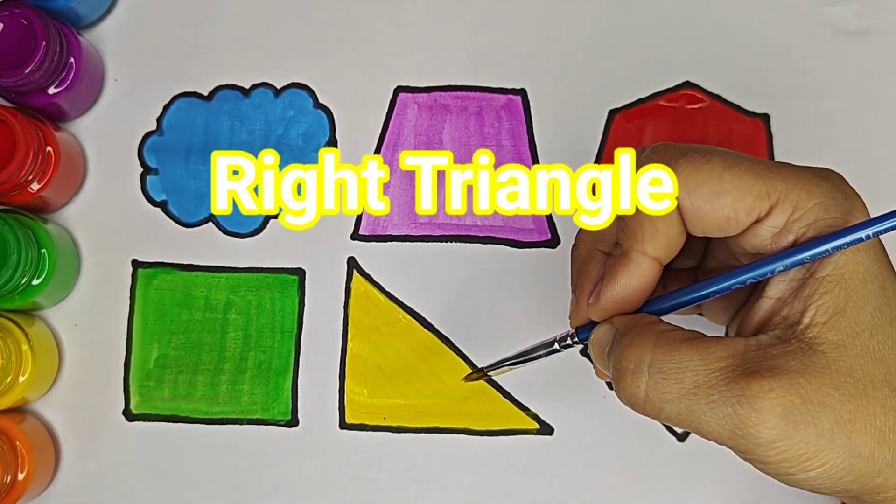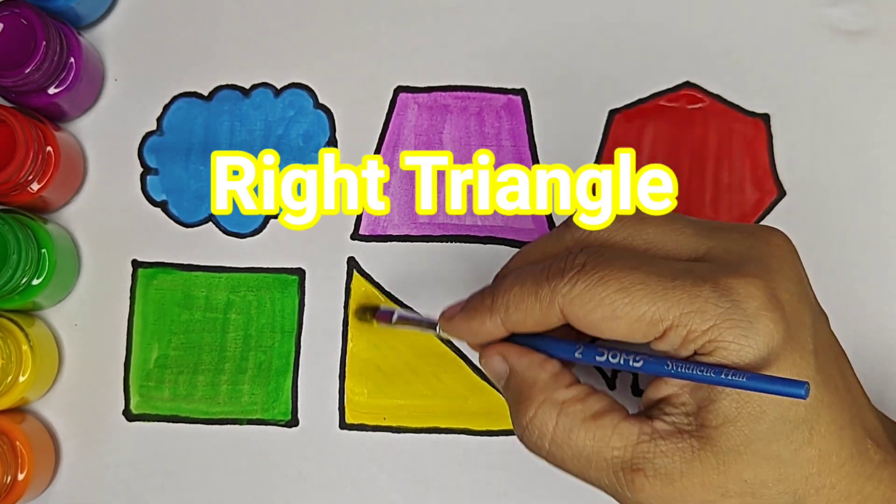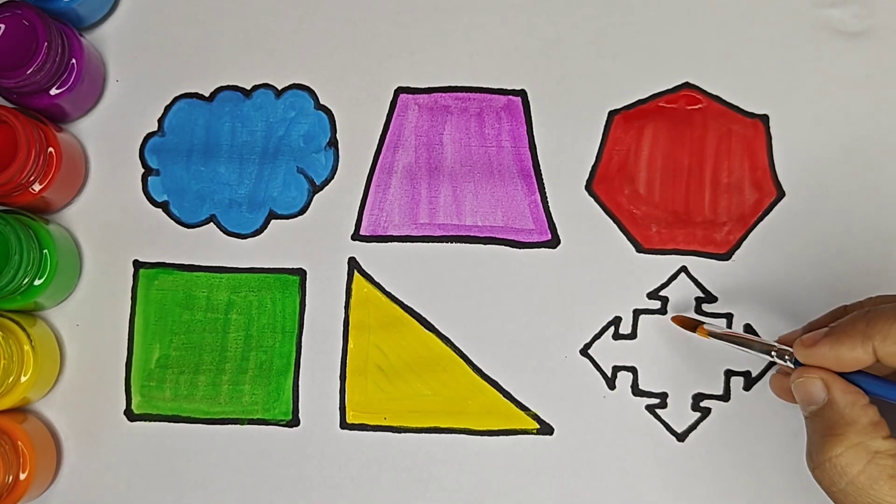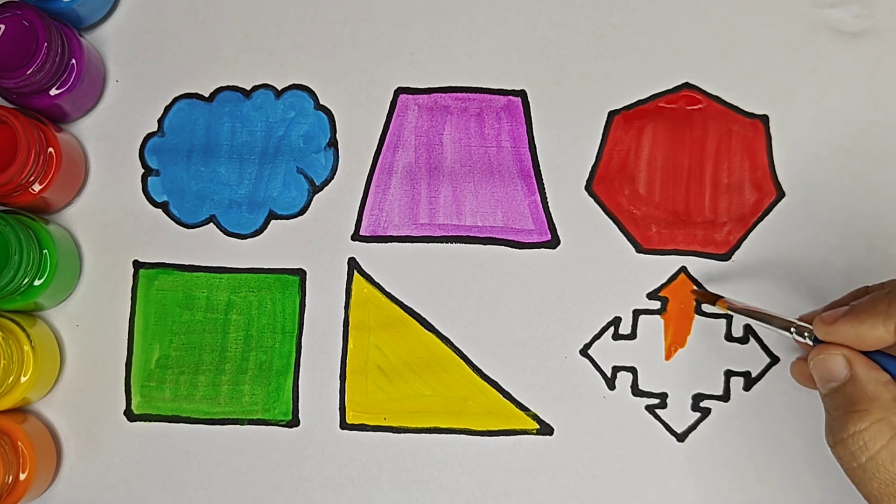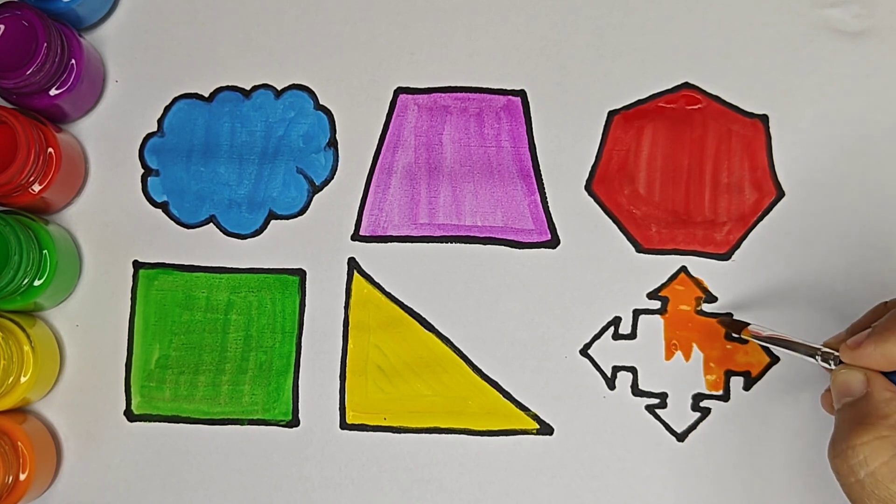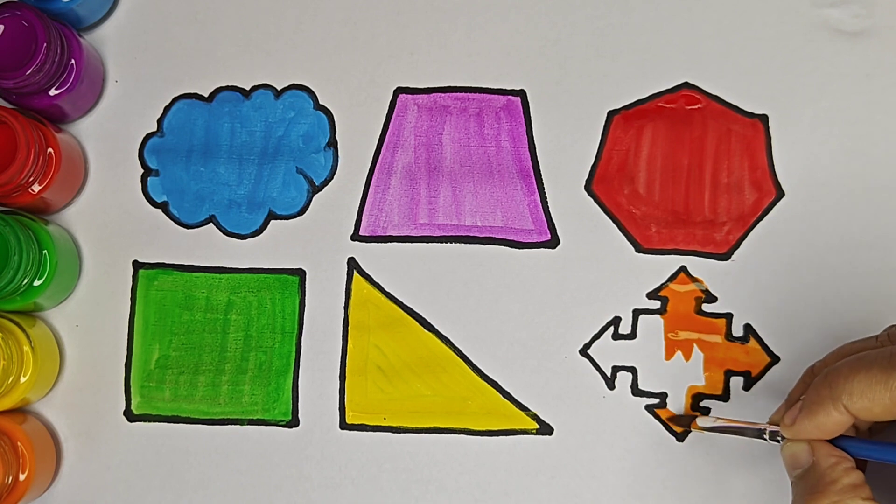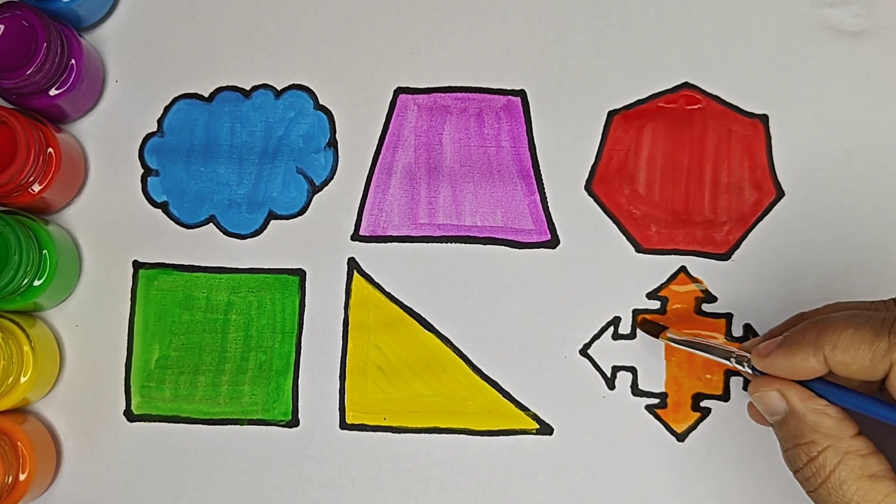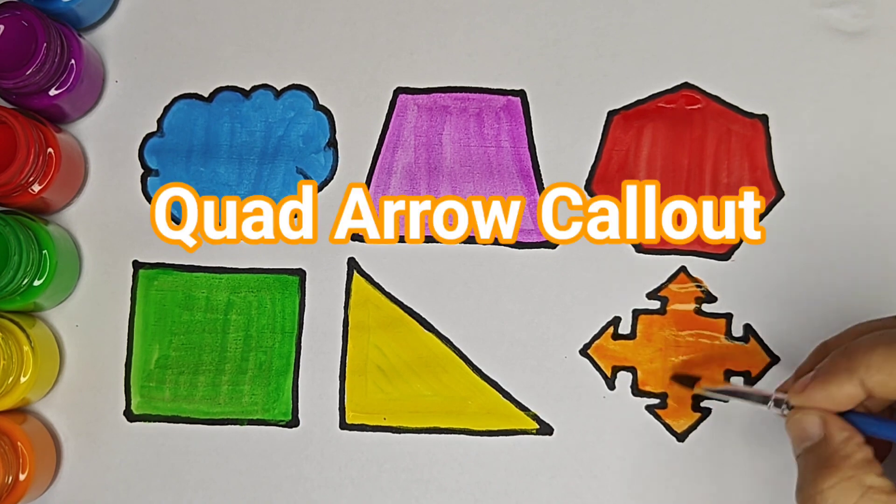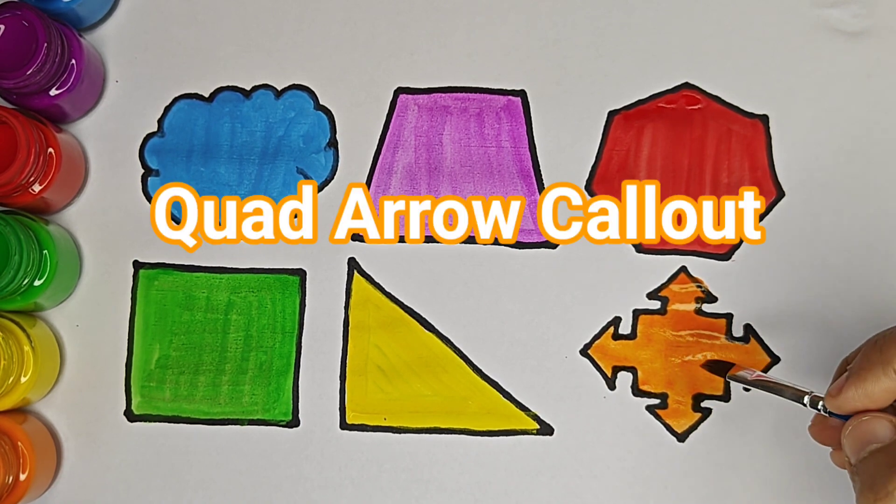This is right-angle triangle. It has three sides: one, two, three. Orange color. This is quad arrow callout.